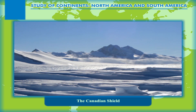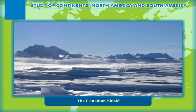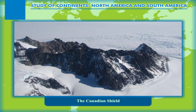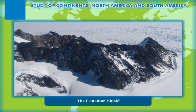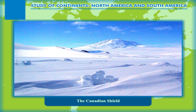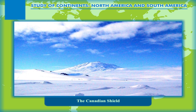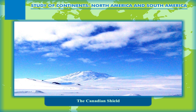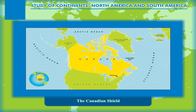The shield, which was completely covered by ice during the Ice Age, has been worn down to form a peneplain. It is formed by the oldest and hardest rocks found over the continent. The eastern part of the shield is formed by the Labrador Plateau. Several islands lying towards the north in the Arctic Ocean represent the submerged portion of the Canadian Shield.